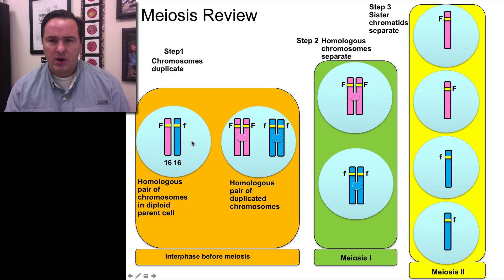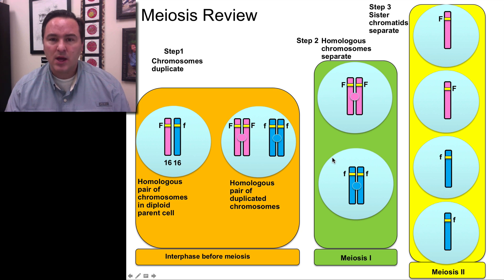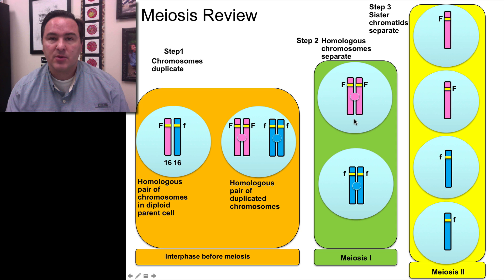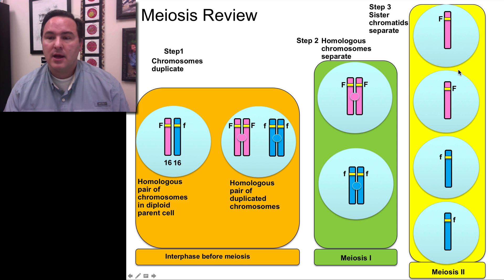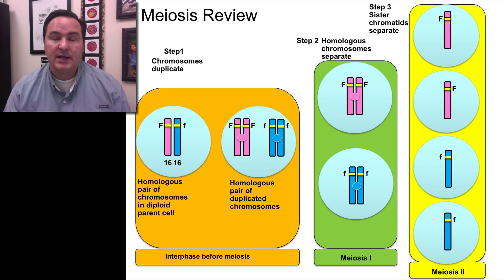Recall that we start with a diploid cell. In meiosis I, we make that diploid cell become a haploid cell, even though it has double the amount of DNA — those sister chromatids. And then we separate the sister chromatids, still having a haploid cell. We just have four haploid cells that resulted from the one initial diploid cell.